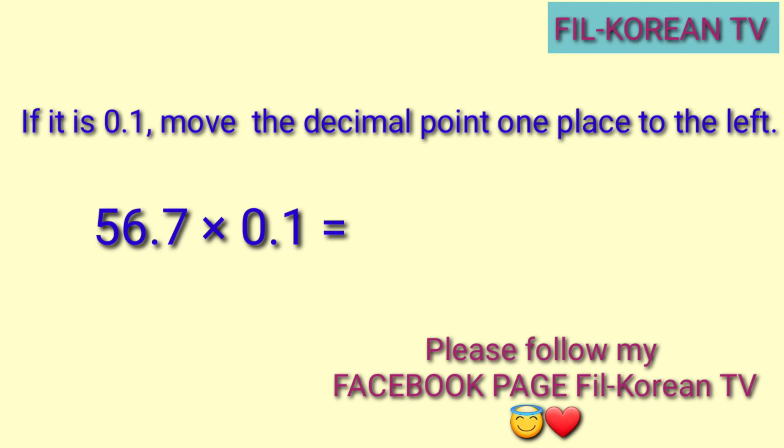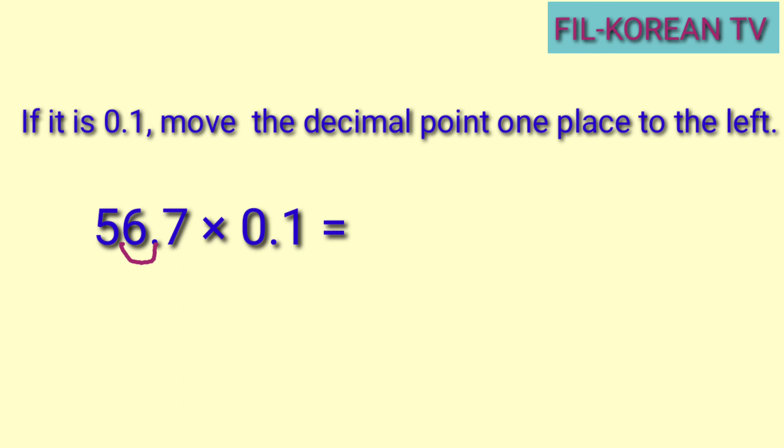Let's have another example. Fifty-six and seven-tenths times one-tenth. Okay, ang gagawin lang natin, i-move natin ang decimal point ng fifty-six and seven-tenths ng isang beses pakaliwa. Kaya ang decimal point ay ilalagay natin sa gitna ng five at saka six. Ang magiging answer ay five and sixty-seven hundredths.